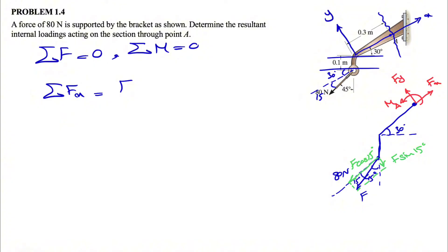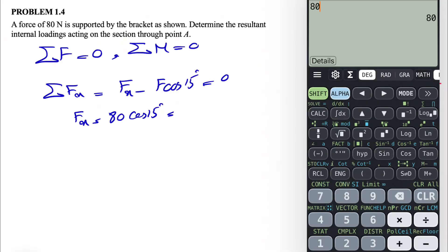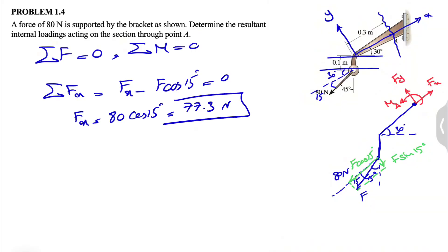In F direction, we have Fx minus F cosine of 15 degrees equals zero. We already know that F is 80, so 80 cosine of 15 degrees gives us 77.3 Newton. That's our first unknown at point A.